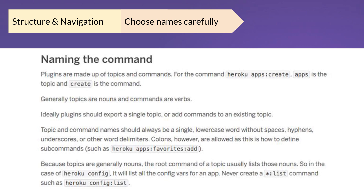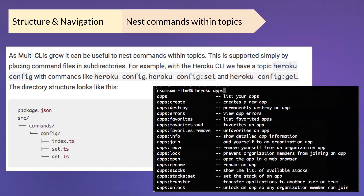This helps users remember commands — it aids muscle memory if they just have to remember one word with no special characters or symbols. When building the CLI, we structure it so that the folders look the same for the developer building the CLI as they do for the end user. Each folder is a topic — for example, 'config' — and each command is a file underneath that topic. As the developer works on the CLI, they can easily find the right part of the code. On the right, you'll see a typical topic like 'heroku apps' with a full list of commands underneath it.